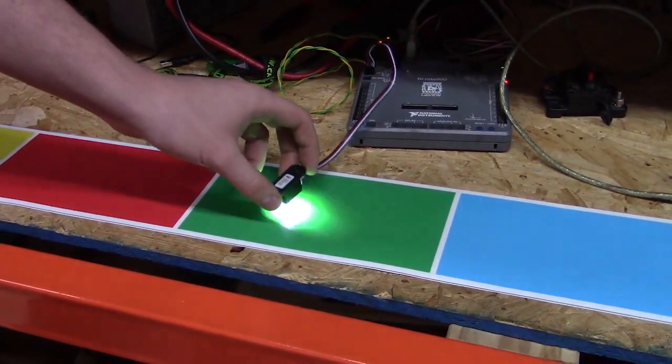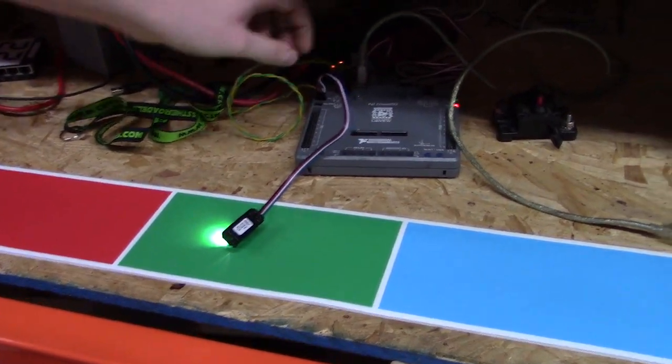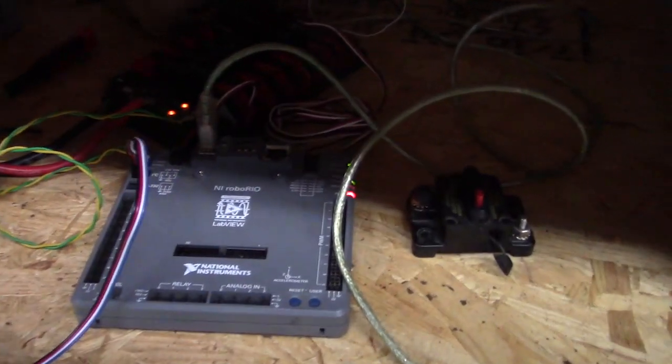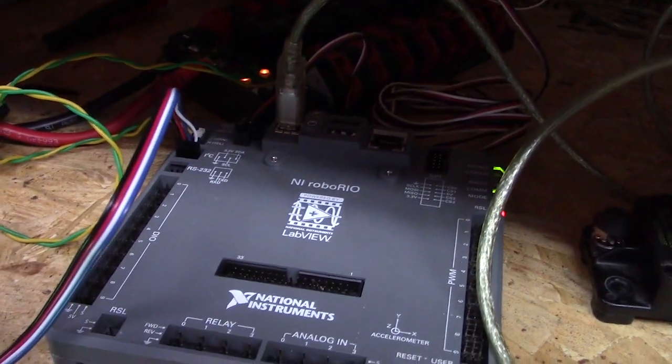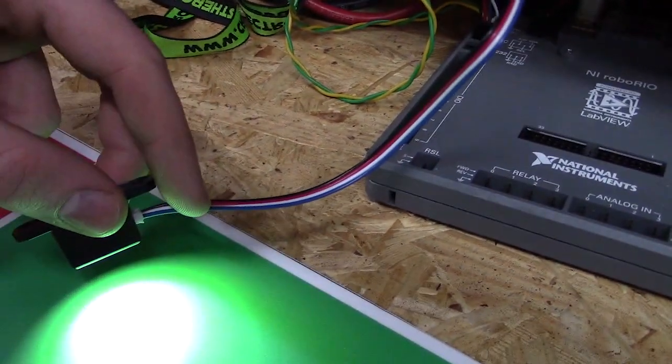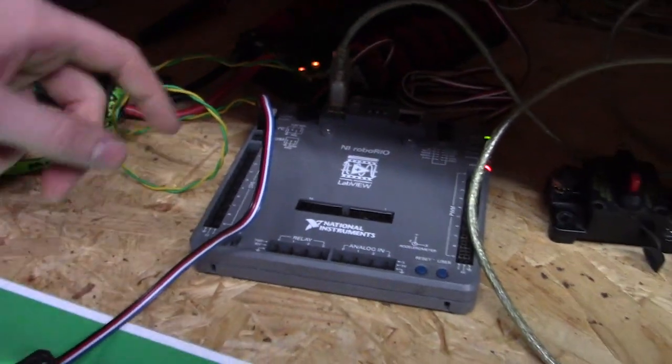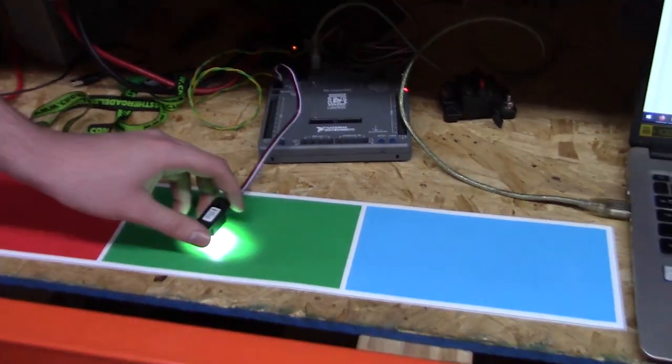One thing I'd like to note, when you're plugging into your RoboRio, you do have to switch the data cables for the I2C between SCL and SDA. Make sure you know exactly what wire is going where so that you're getting your proper data.